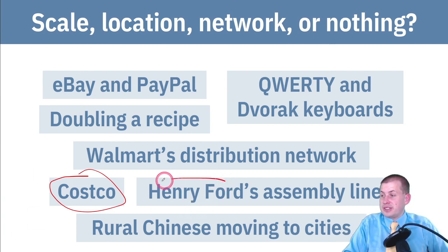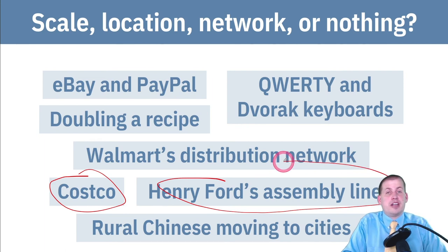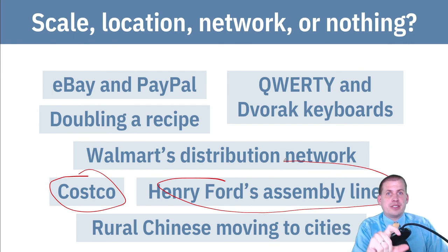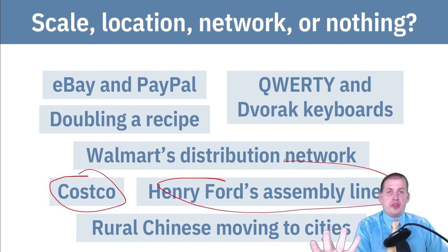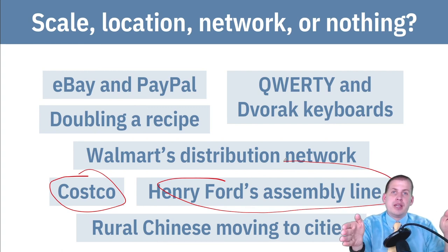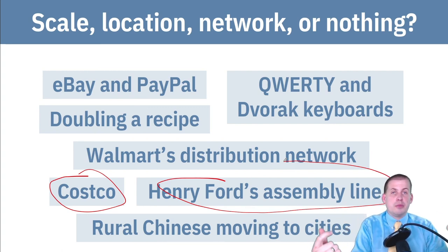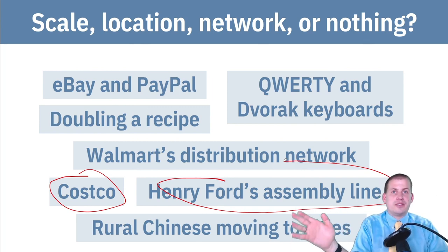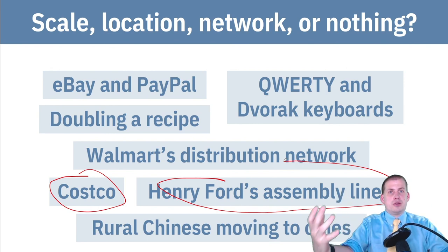Henry Ford's assembly line is a good example of economies of scale. By changing the order of how things were constructed, they were actually able to create more things in the same period of time — essentially doubling their inputs and getting more than double the outputs, becoming super hyper productive. That was because of specialization and other factors, but it made them more efficient in creating stuff.